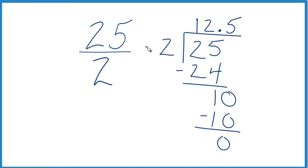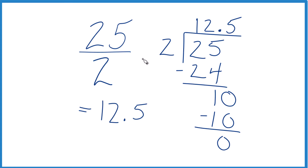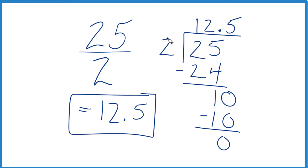So in answer to our question, the fraction 25 over 2 equals the decimal 12.5, which is pretty close to what we estimated we'd get. This is Dr. B, converting 25 over 2 — the fraction to a decimal. The answer is 12.5.